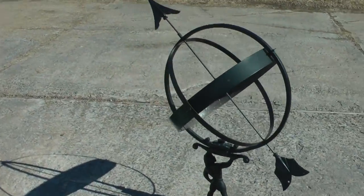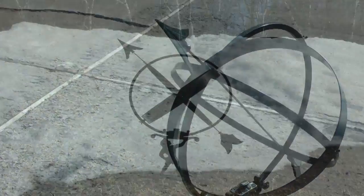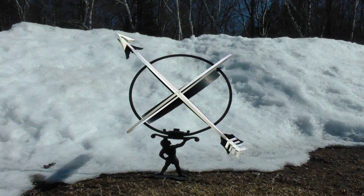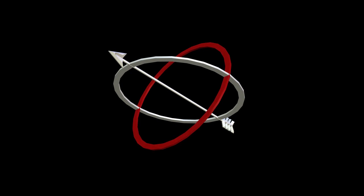This is an armillary sundial. Viewed from the side, it looks like this. This ring represents the equatorial plane. The earth is at the center. This ring sits directly above the earth's equator.